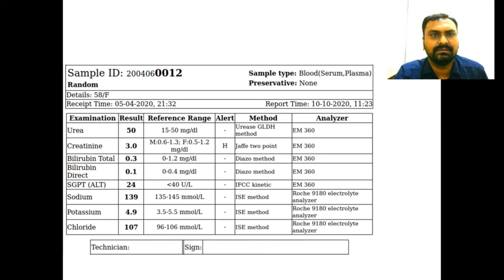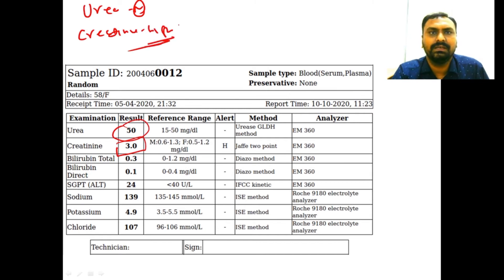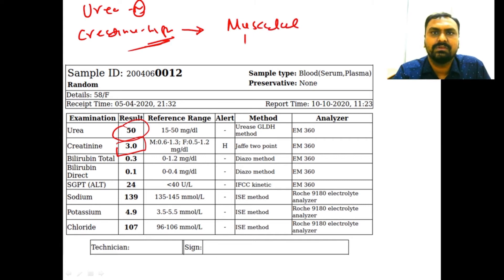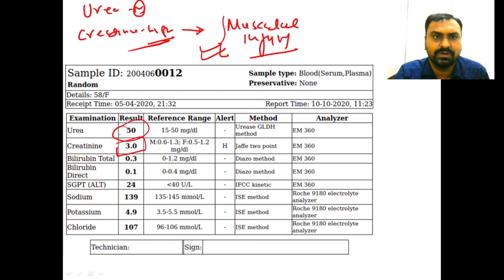In another report, urea is about normal but creatinine is high. Creatinine also increases in muscular injury — muscle damage causes creatinine levels to rise. This can occur in muscular dystrophy or rhabdomyolysis. These are rare, but it is important to remember that creatinine may be elevated in cases of muscle damage.